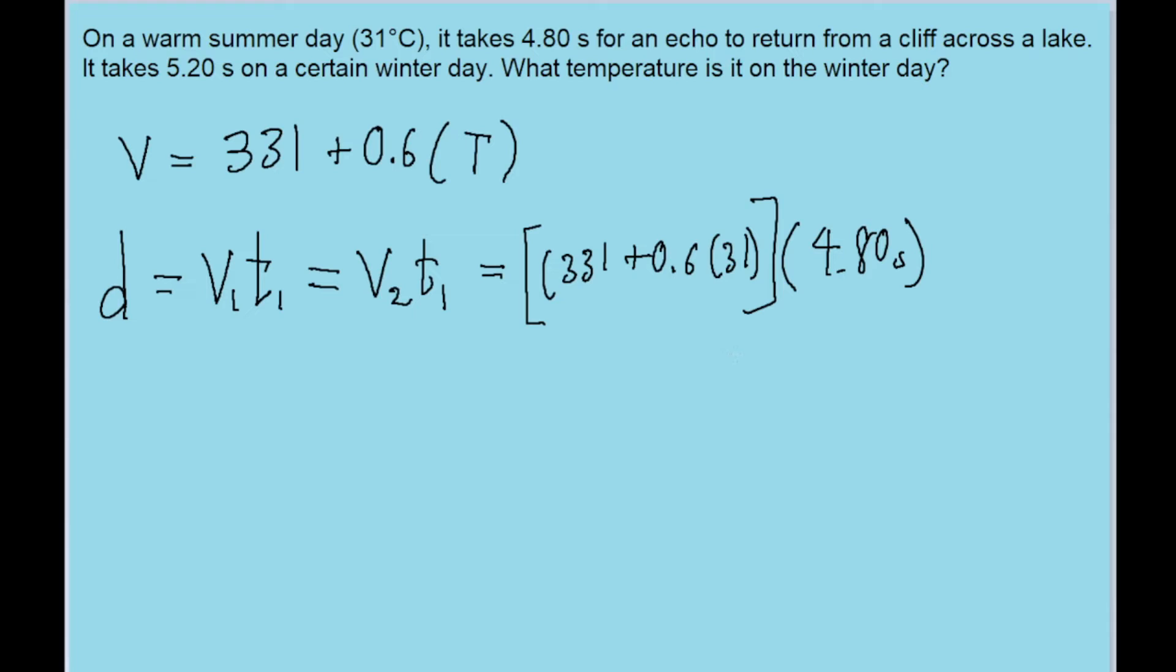For the winter day, this equals (331 + 0.6 × T₂) × 5.20 seconds, where T₂ is our unknown—that's what we're trying to find.